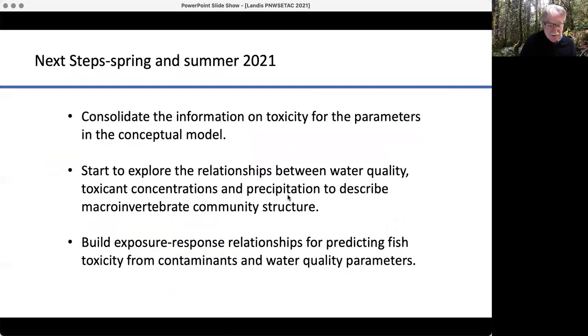Next steps are almost to the end of 2021. Consolidate information on toxicity and for the parameters. Explore the relationship between water quality, toxic concentration, and precipitation. Describe or predict the macroinvertebrate community structure, and build exposure response relationships for predicting fish toxicity for the contaminants.